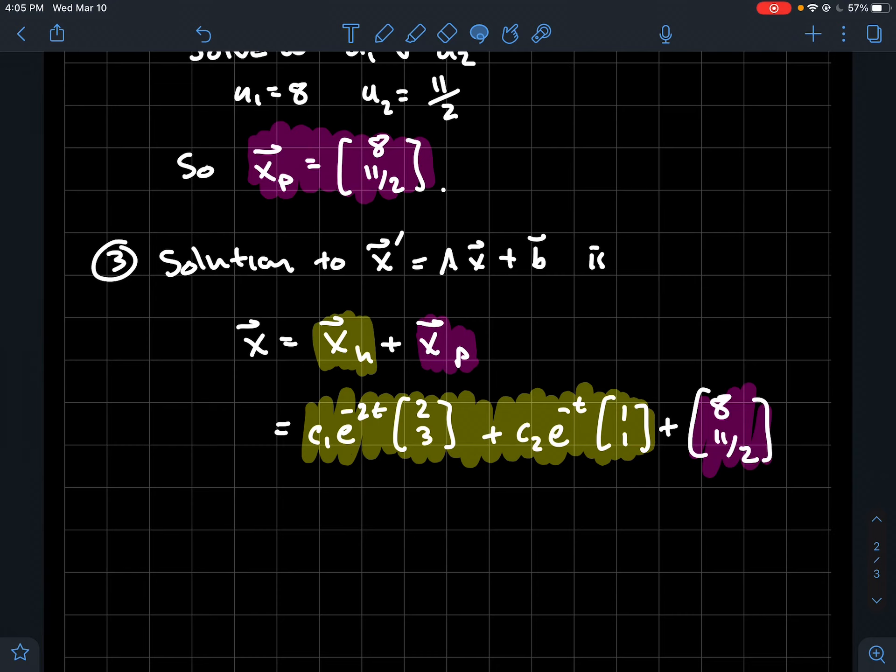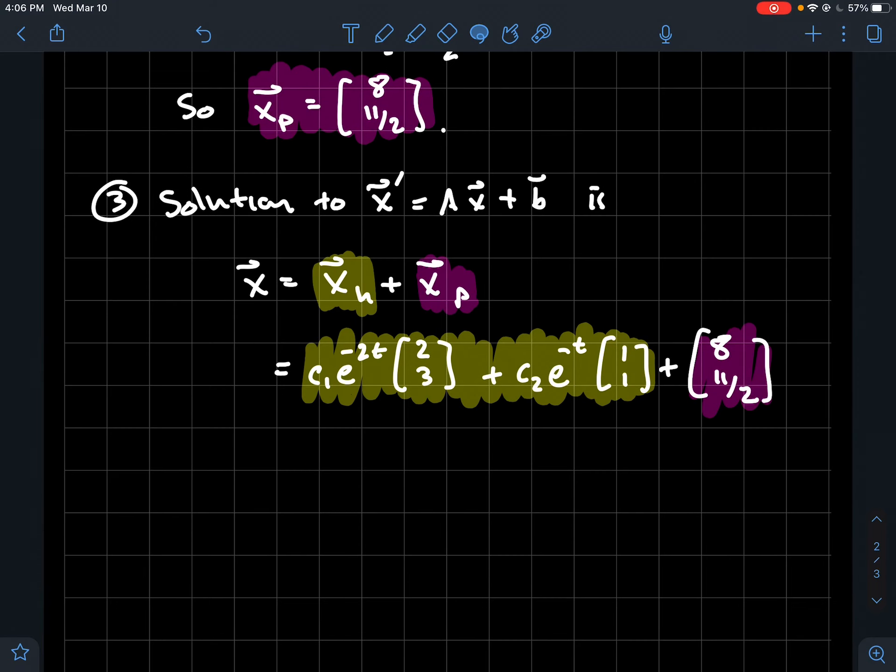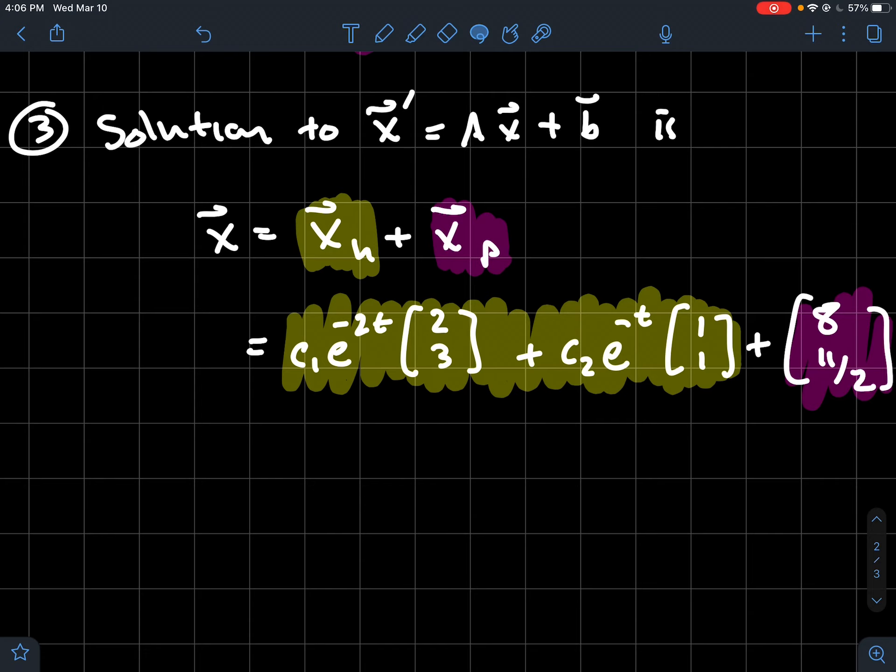Here is where you've got your general solution to the inhomogeneous system. If you are given in the very beginning initial conditions for x and y, you'd plug them into this last expression for x to find c1 and c2. You don't want to plug them in at the beginning into the homogeneous one, you want to plug them in here.